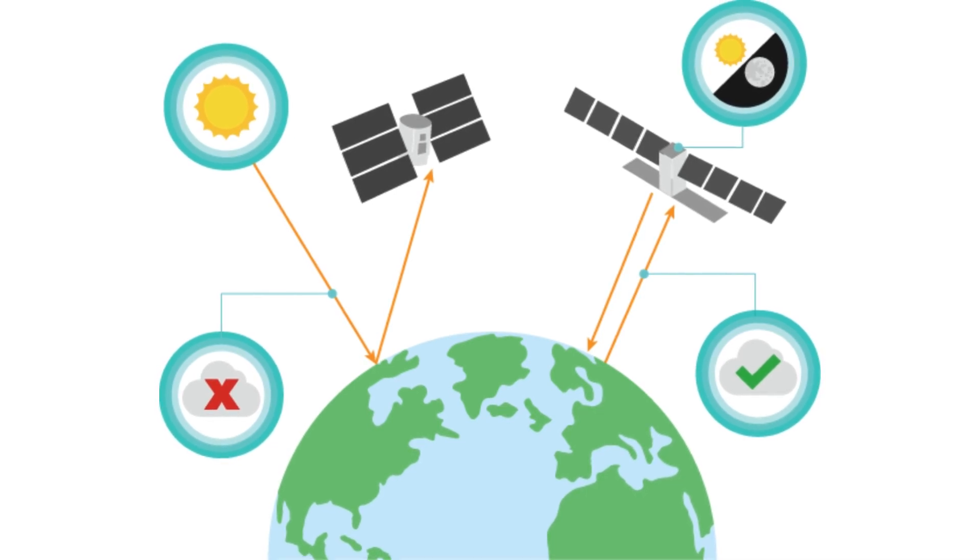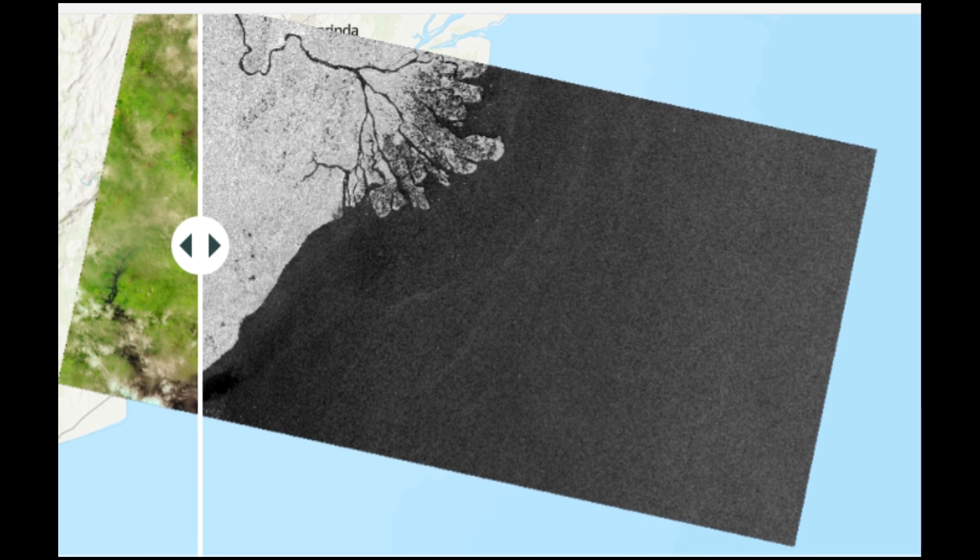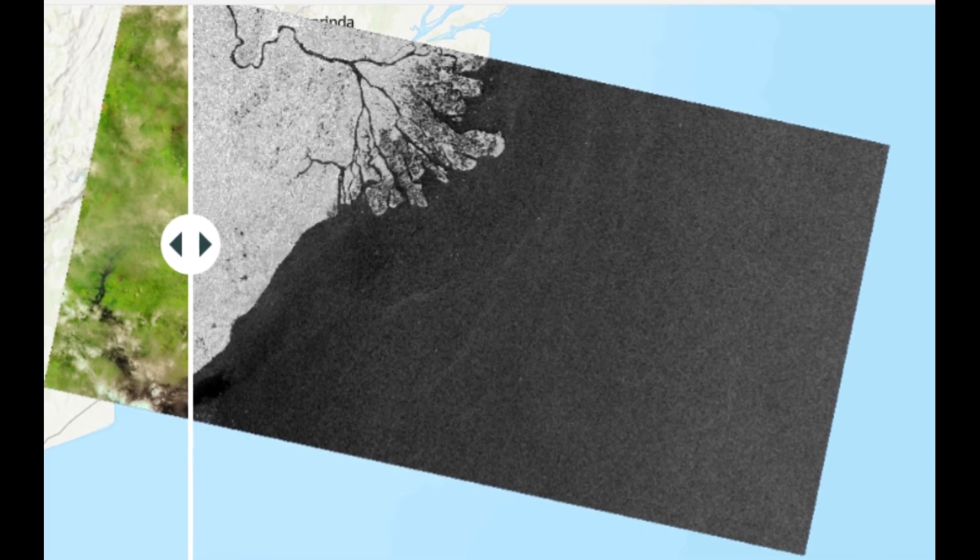Unlike an optical sensor, a SAR sensor can operate during the day or night, independent of the sun, since it transmits its own signal.